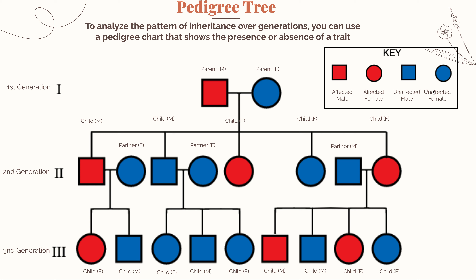According to our specific key for this pedigree tree, males are shown with squares and females are shown with circles. Also important to note is the color: red shows that those individuals do have the trait, while blue shows that the individuals do not have the trait. Red is showing the effect of that trait in your phenotype, while unaffected blue means the trait is not reflected in their phenotype.